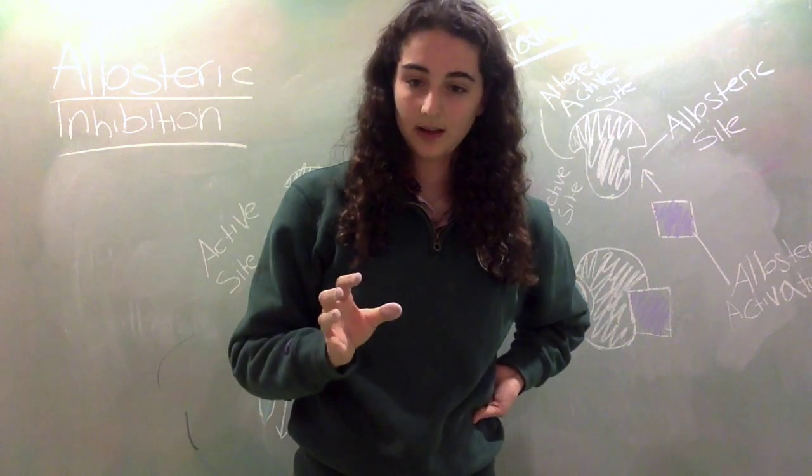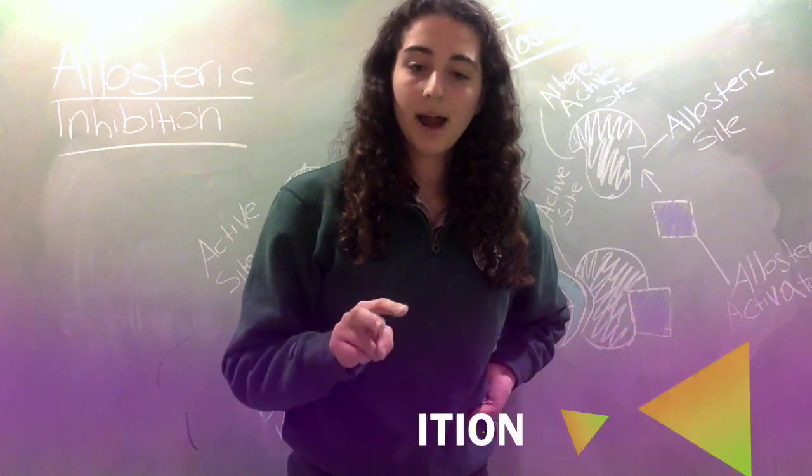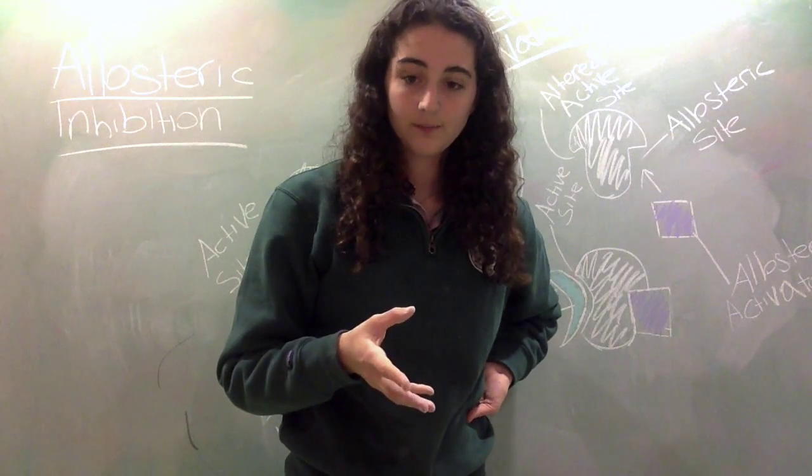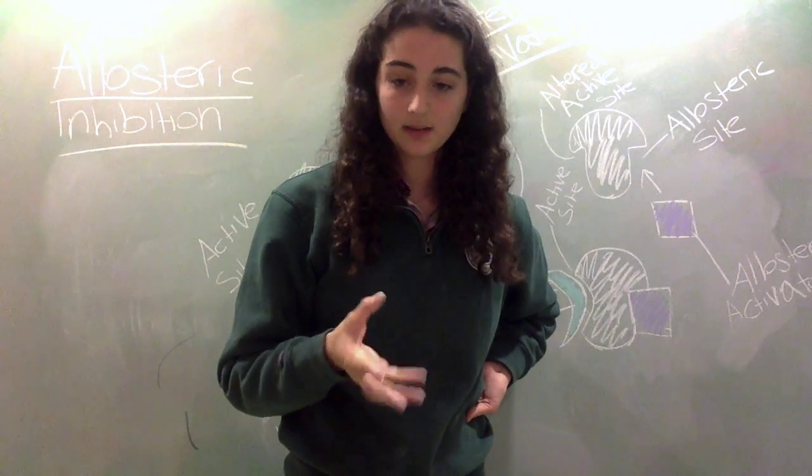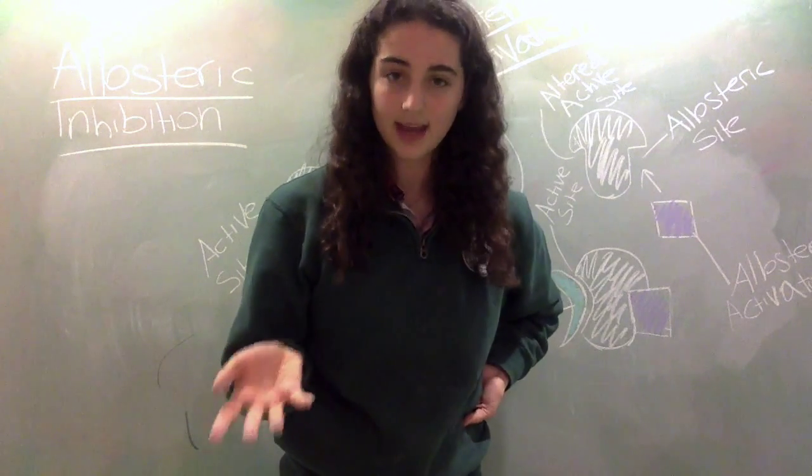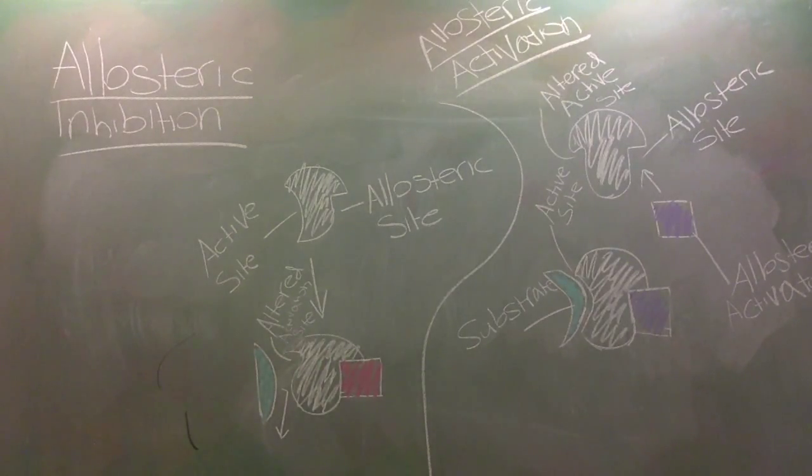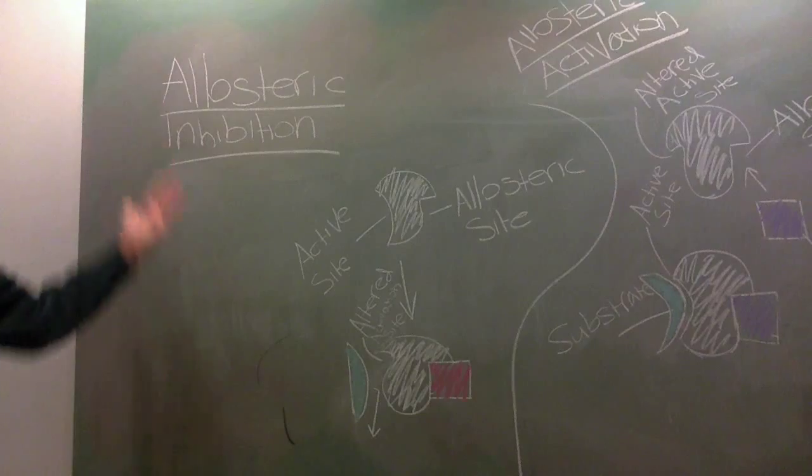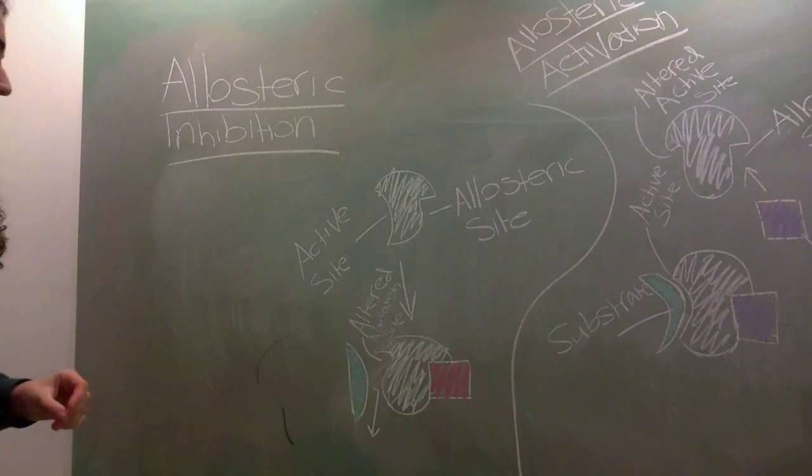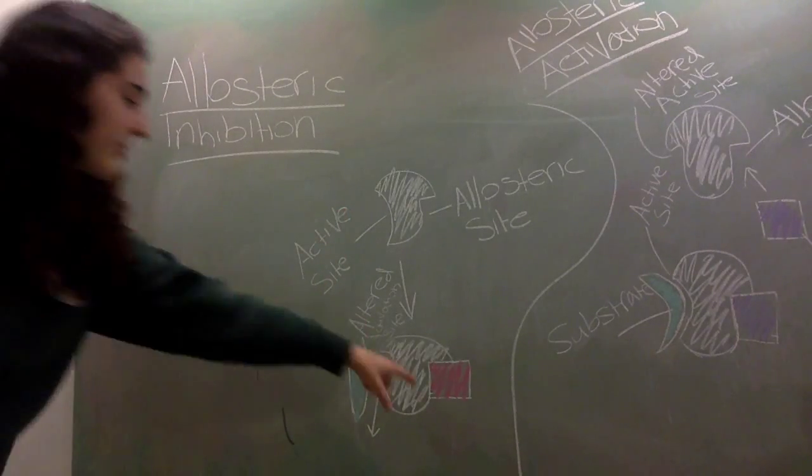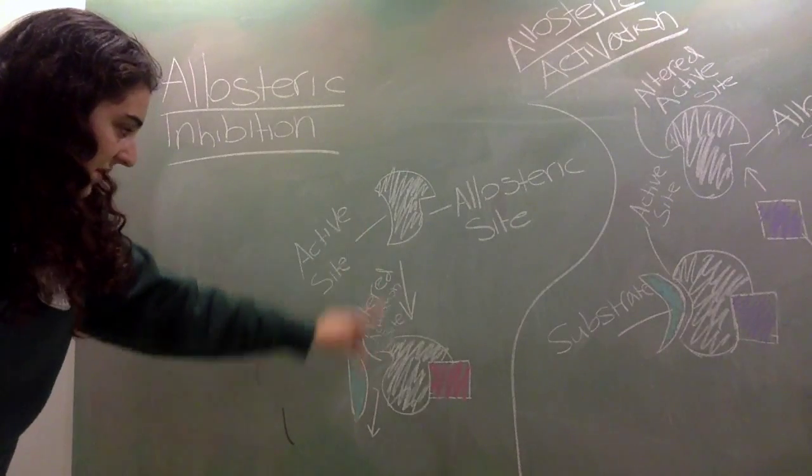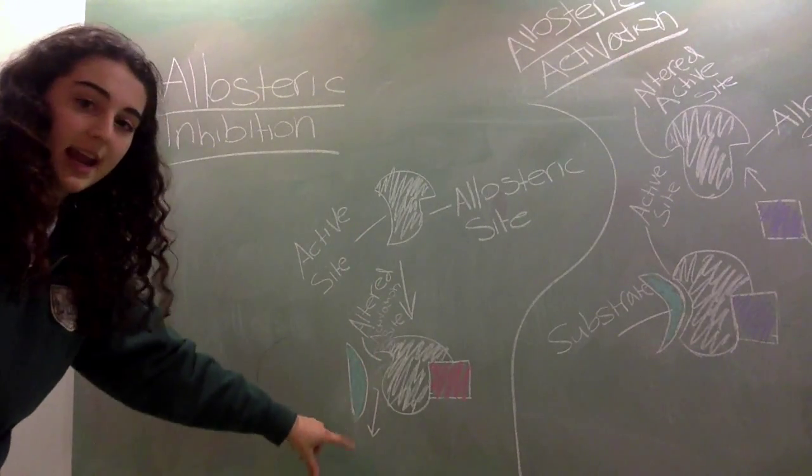Speaking of allosteric sites, allosteric inhibition is where one inhibitor molecule binds to an enzyme at the allosteric site where their binding causes a structural change, making the enzyme less interested in the substrate. This type of inhibition also does not allow the enzyme to bind, thus prohibiting its function once again. This is my lovely drawing of allosteric inhibition. So here's the enzyme. This is the allosteric site, this is the active site. The allosteric inhibitor binds to the allosteric site, causing the active site to alter its shape from this to this, and now the substrate can't bind and leaves.